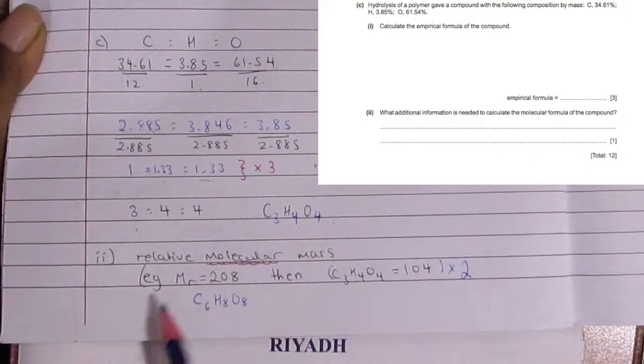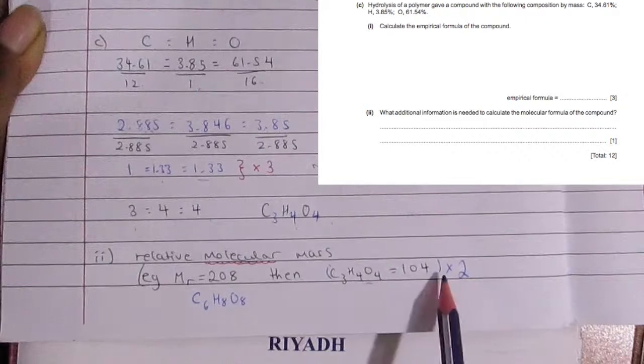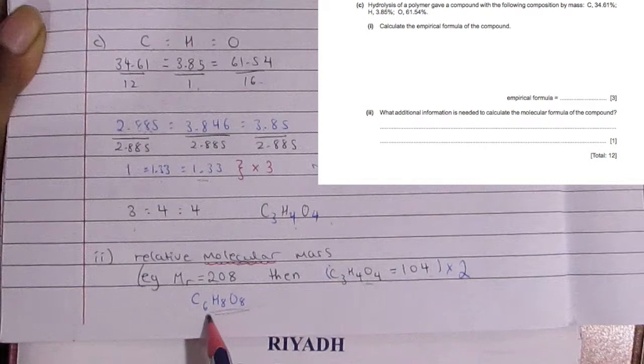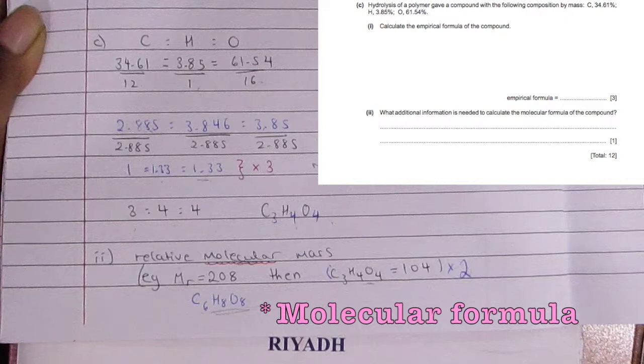But if you want the molecular formula you also need the relative molecular mass. The relative molecular mass is 208 and the empirical formula gives you 104, so you just multiply by 2. So then the molecular mass is actually C6H8O8.